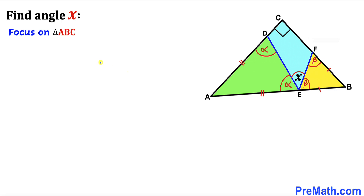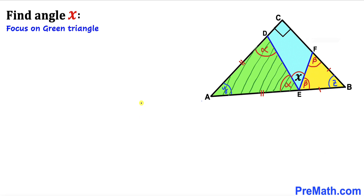Now let's focus on the big triangle ABC. We know that this angle is 90 degrees. Let me label this angle as Y and this angle as Z.